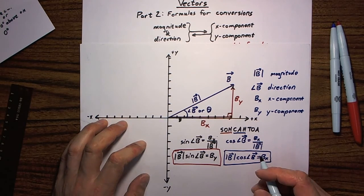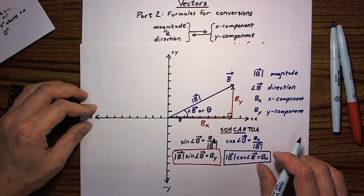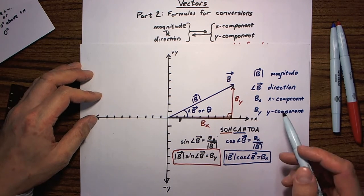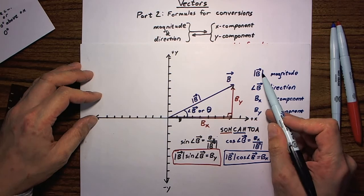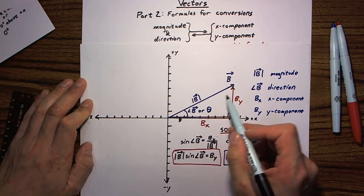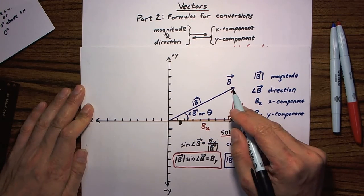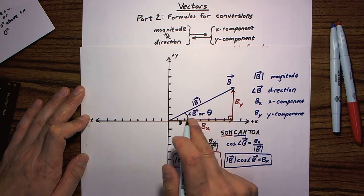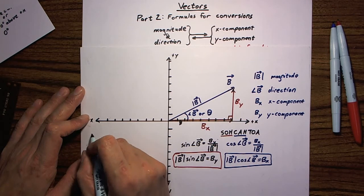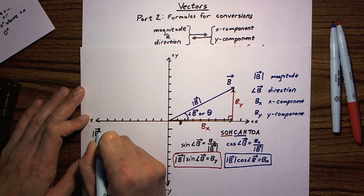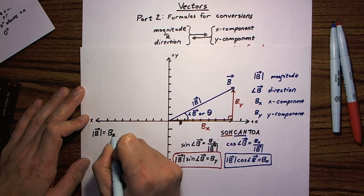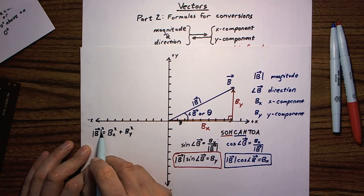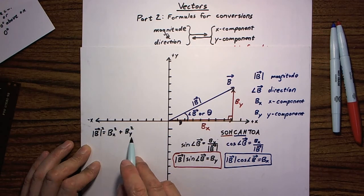Now let's look at how to convert from components back to magnitude and direction. If I know bx and by, how do I get the magnitude and direction of b? The magnitude part you've probably already guessed — magnitude is the hypotenuse, and x and y components are the legs. So in order to get the length of the hypotenuse, you can just apply the Pythagorean theorem. The magnitude of b squared equals bx squared plus by squared — that's c² = a² + b². Flip the terms around and you get the same formula.